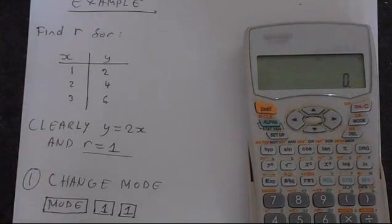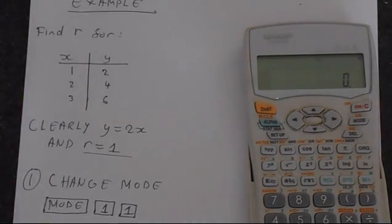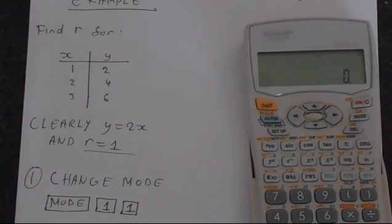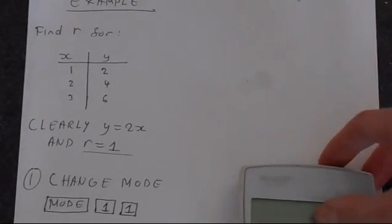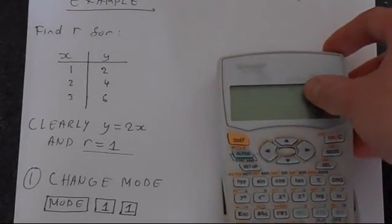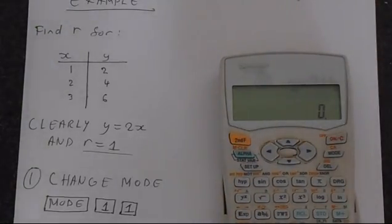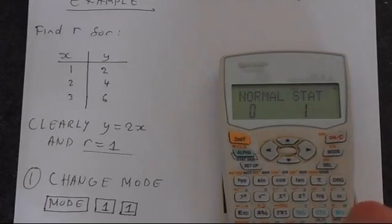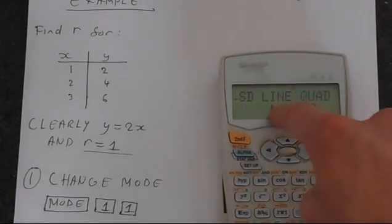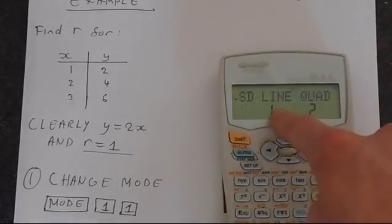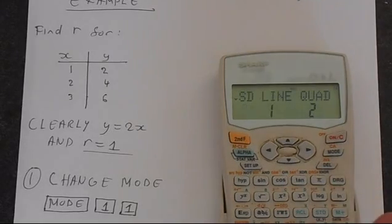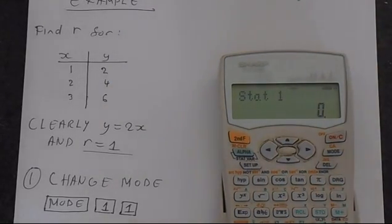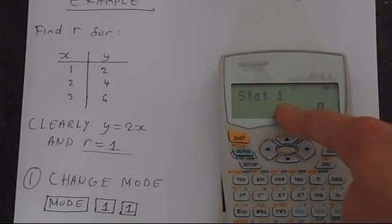Picked this example so that we know what the answer is going to be before we do it, so we're not relying on the calculator. So let's go down here. So the first step is to change the calculator into the correct mode. So we want to go mode, and then we want to put it in stat mode, and we're entering two sets of data. There's x values and y values, so we're wanting 1. So we do mode 1, 1, gets you in the correct mode. So this is mode stat 1, unsurprisingly.